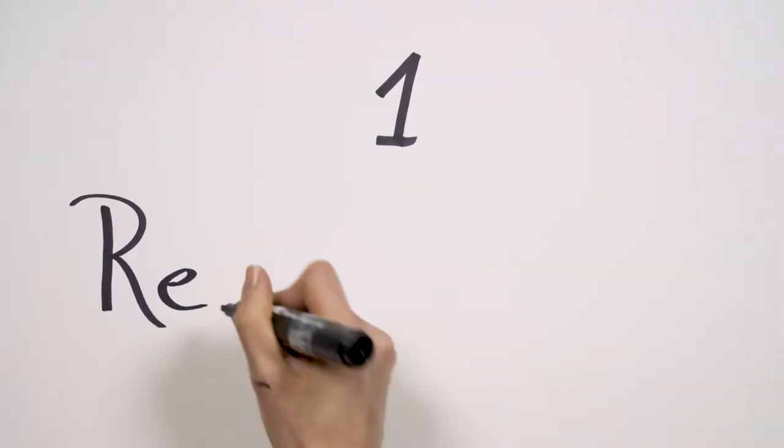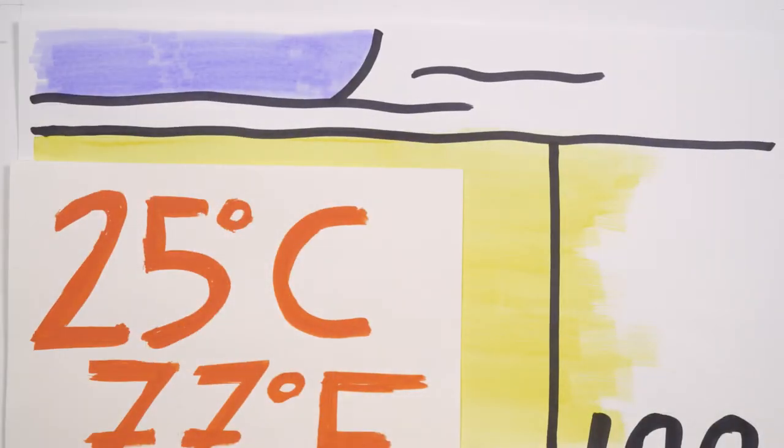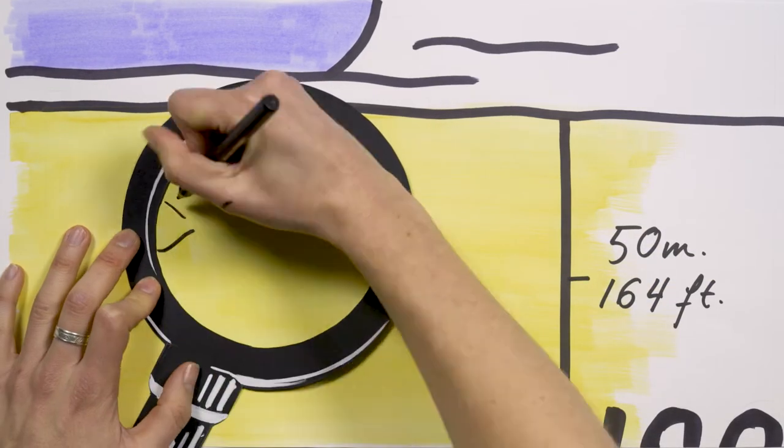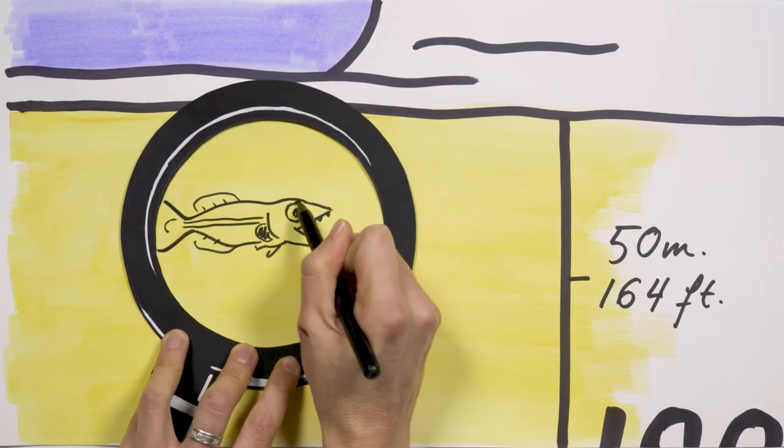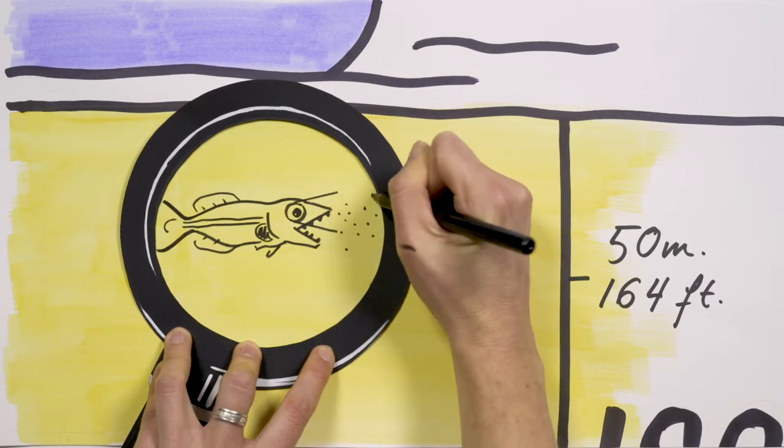The first thing we're going to look at is reproduction. Let's zoom into the picture we just saw. We know that the reason tuna reproduce near the surface is because their larvae need light in order to see their prey among the plankton, and because they need warm waters in order to survive.